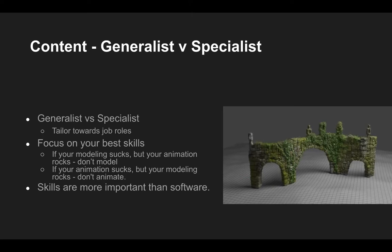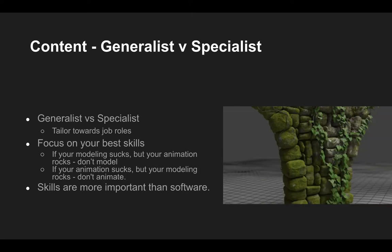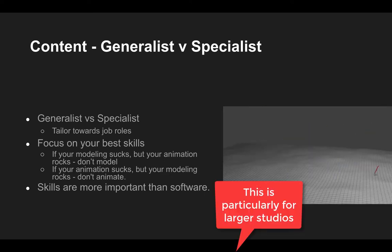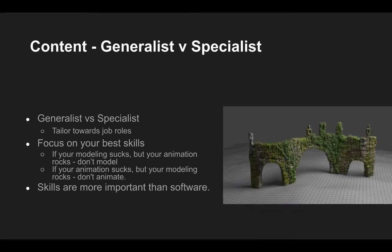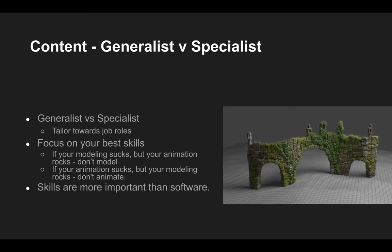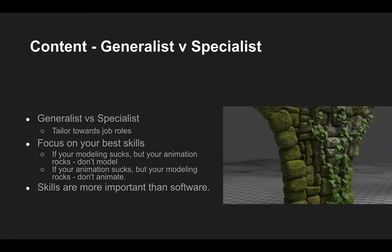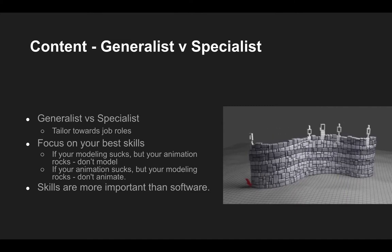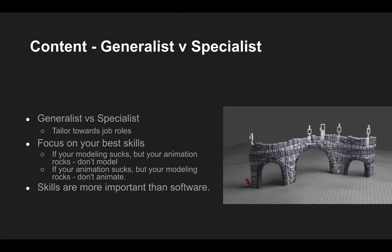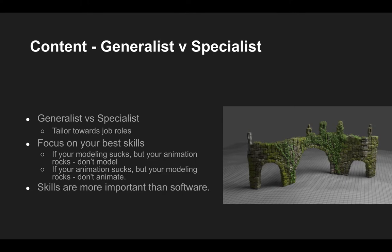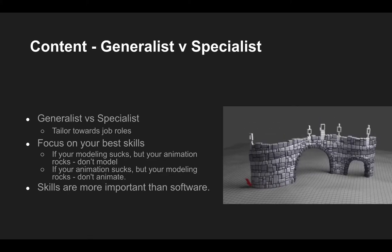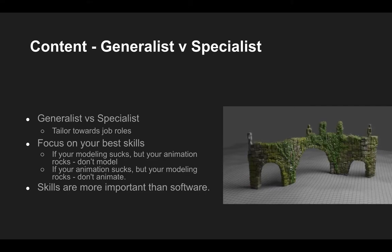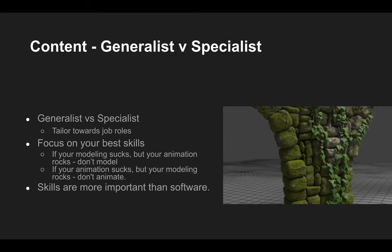Something important that students often miss: studios will consider you for a role and they really don't care if you can only animate and can't model, or if you can only do effects and can't do compositing. Students often underestimate this. So for larger companies, if your modeling is poor but your animation is really good, just get some generic characters — download one, make sure to check the licensing, try to get one that's Creative Commons — to demonstrate your animation skills. Do not model a poorly modeled character and then animate it. Download a rigged model, credit whoever made it, and then animate.